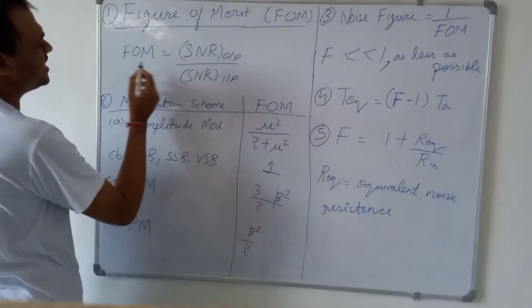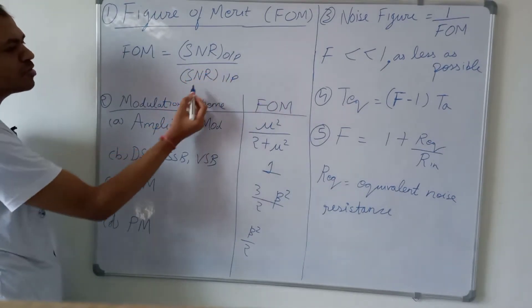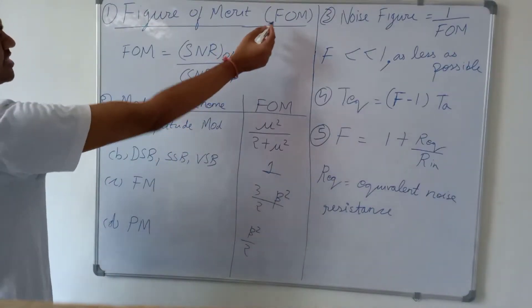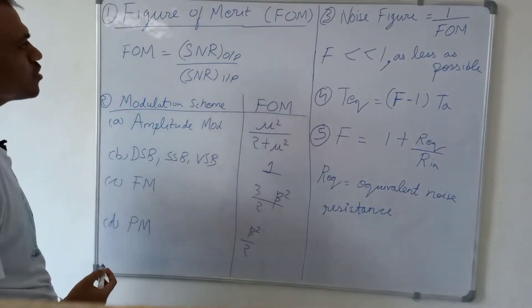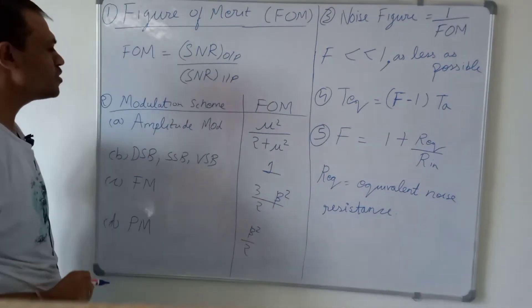Figure of merit is the ratio of SNR, signal to noise ratio of the output upon signal to noise ratio of the input. Figure of merit is denoted by FOM. This is the short form of figure of merit and it is the ratio of two SNRs of output to the input.